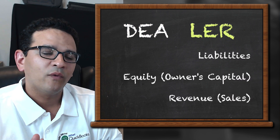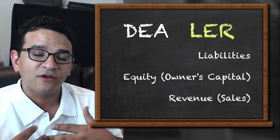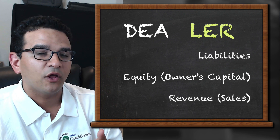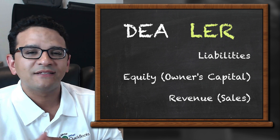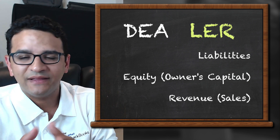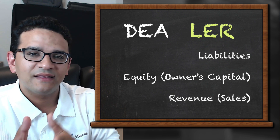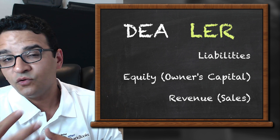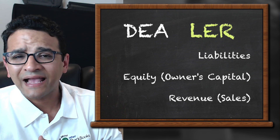On the right side we have L-E-R. L is for liability — all the monies we owe to third parties, including accounts payable and short-term and long-term liabilities owed to banks. E stands for equity, or owner's equity — the owner's investment into the business — which is a credit account. R is for revenue or sales; every time you make a sale, that's a credit account.